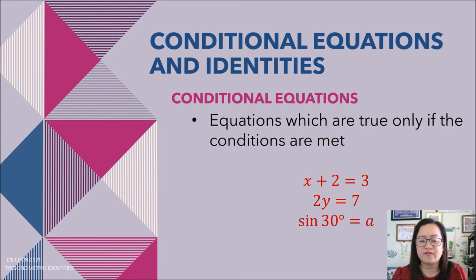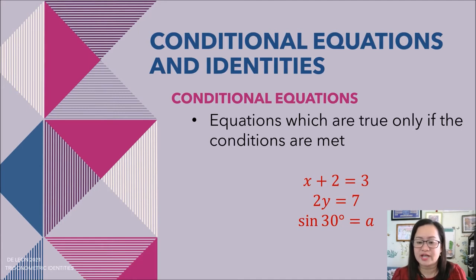By definition, conditional equations are equations which are true only if the conditions are met. The following are examples: x plus 2 equals 3, 2y equals 7, and sine 30 degrees equals 8.